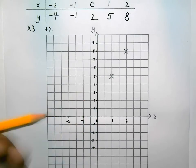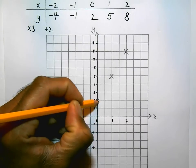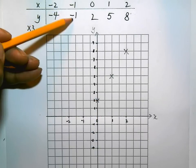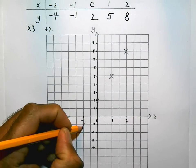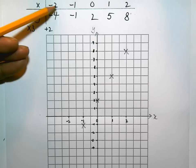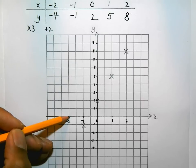Minus 1, minus 1. So minus 1 along and minus 1 down. I'm putting a clear point. And then finally, minus 2, minus 4. Minus 2, minus 4. And there's my result.